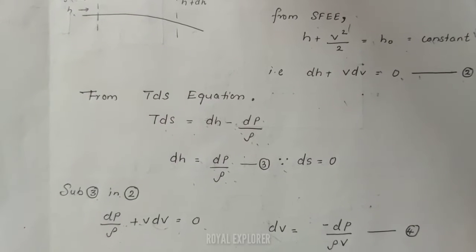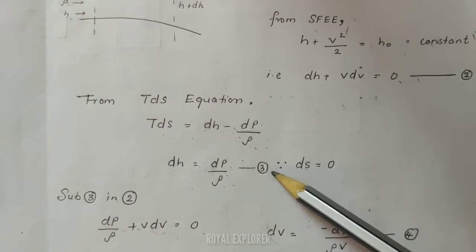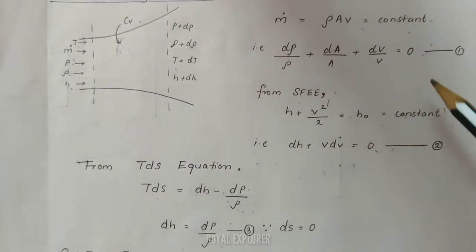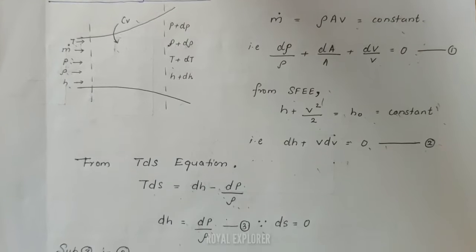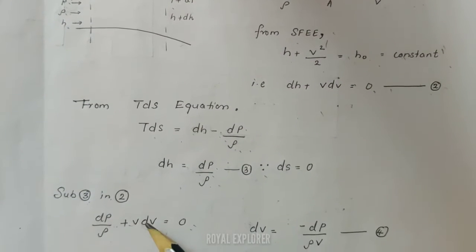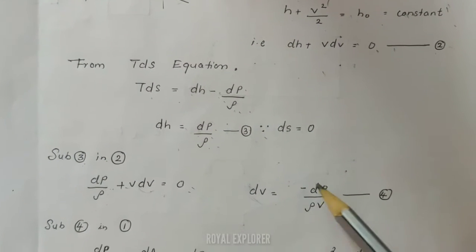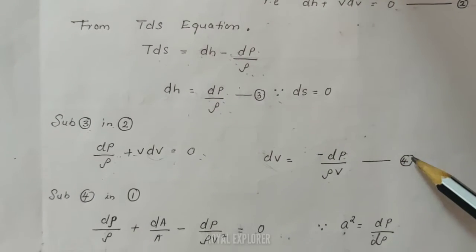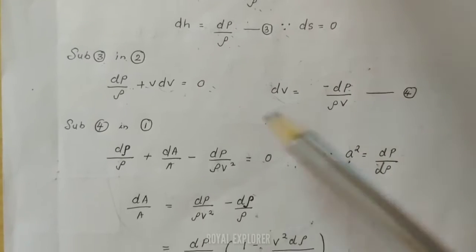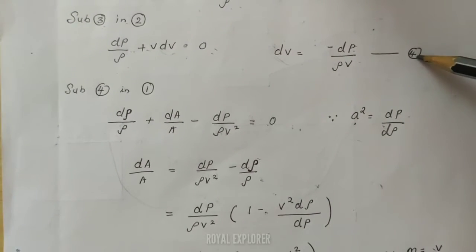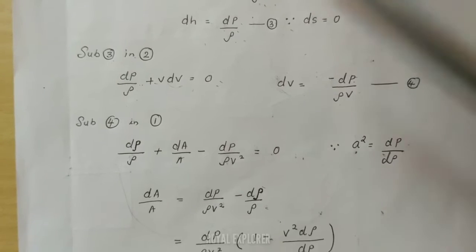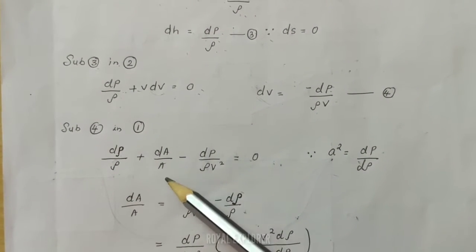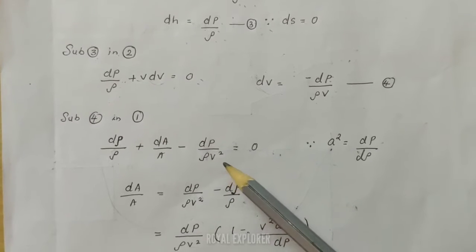Substituting the third equation into the second equation gives: dP by rho plus V dV equals 0, and therefore dV equals minus dP divided by rho V. Substituting into the first equation gives: d-rho by rho plus dA by A minus dP by rho V-squared equals 0.